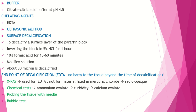Another commonly used method in the laboratory is surface decalcification. We cut the paraffin block, immerse it in decalcifying fluid — such as 5% hydrochloric acid, 10% formic acid, or Mollifect solution — and decalcify approximately 30 microns of the surface of that block.